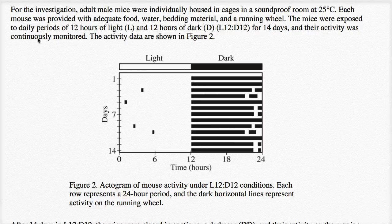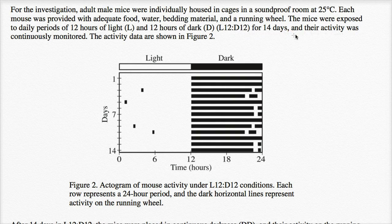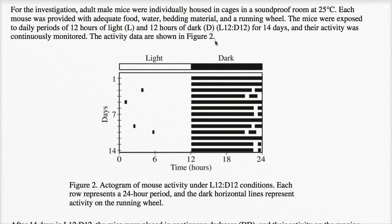The mice were exposed to daily periods of 12 hours of light, capital L, and 12 hours of dark, capital D. L12:D12, so that's 12 hours of light, 12 hours of darkness, for 14 days. And their activity was continuously monitored. The activity data are shown in Figure 2.